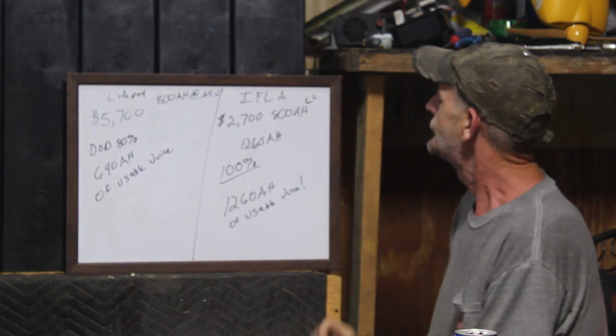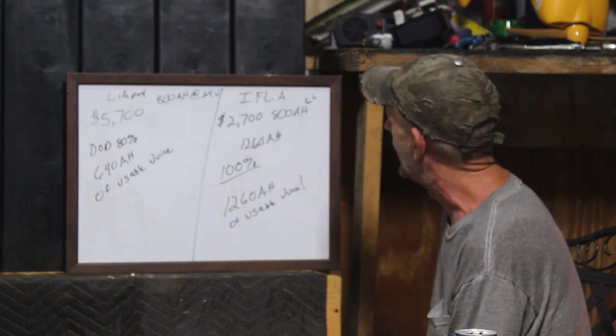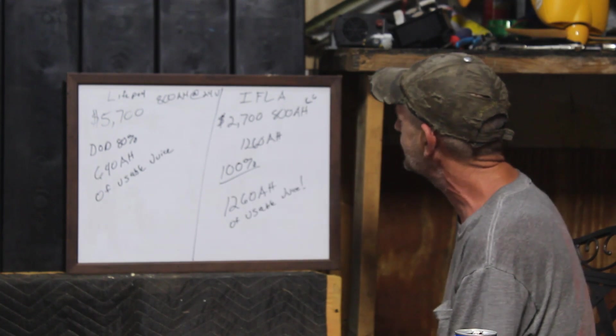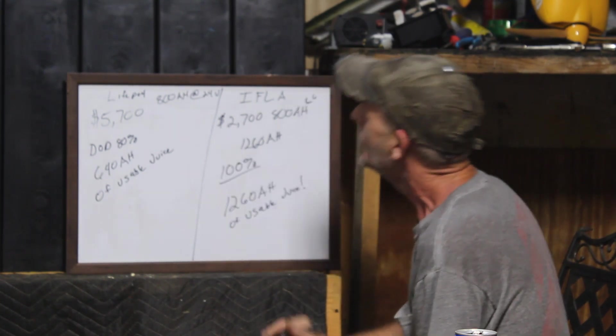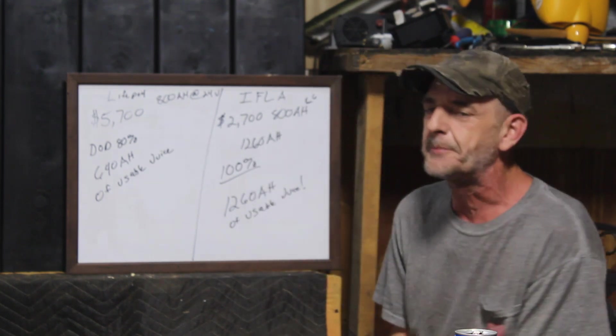So for the $2,700, we get 1,260 amp hours of usable juice. For $5,700, we get 640 amp hours of usable juice.